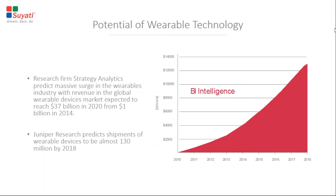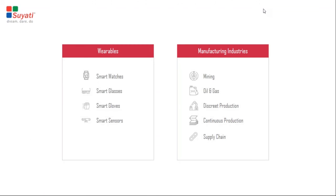What are the wearables we are talking about and what devices does manufacturing cover? Wearables include smart watches or tags, smart glasses, gloves and sensors which are fitted to a garment such as a vest to monitor. Manufacturing industries include mining, oil and gas, distinct production industries such as companies manufacturing cars, airplanes and toys, continuous production industries like oil refining, pulp and metals melting, and then there is the supply chain — moving goods, products and services from suppliers to customers.